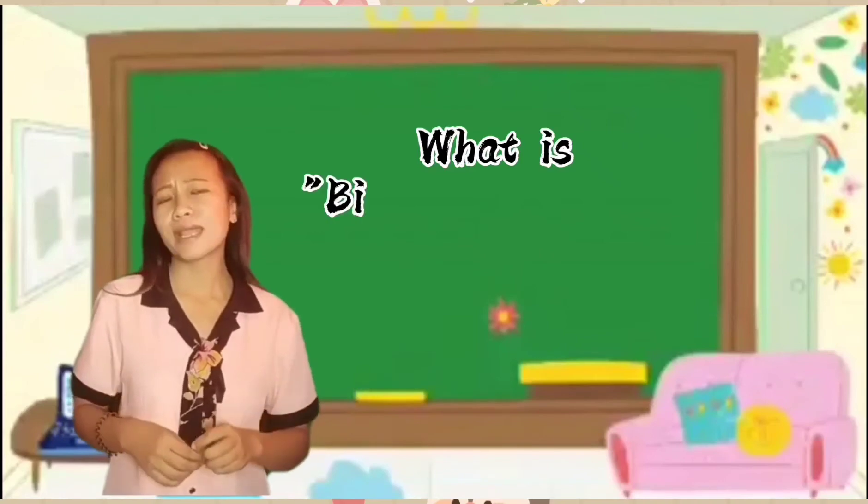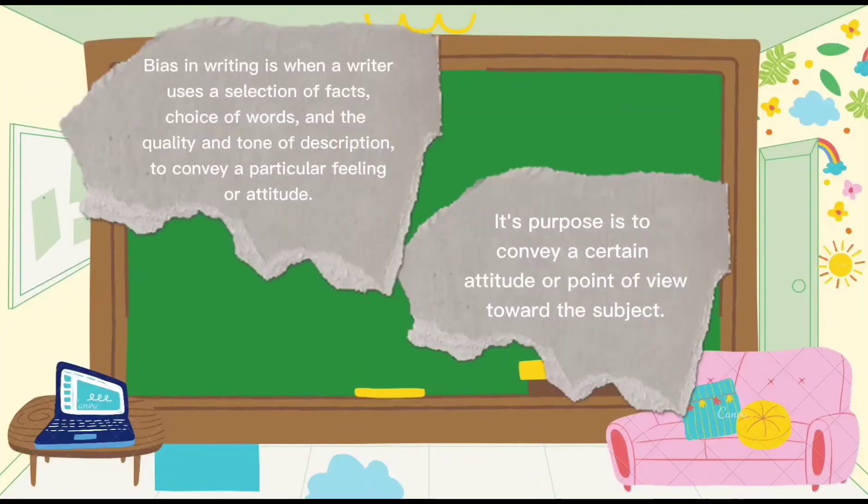So what is bias in writing? Bias in writing class is when an author uses a selection of facts, choice of words, and the quality and tone of description to convey a particular feeling or attitude. Its purpose is to convey a certain attitude or point of view toward the subject.